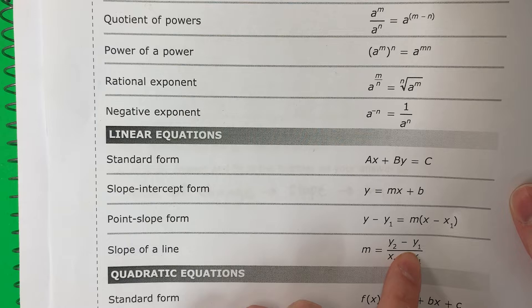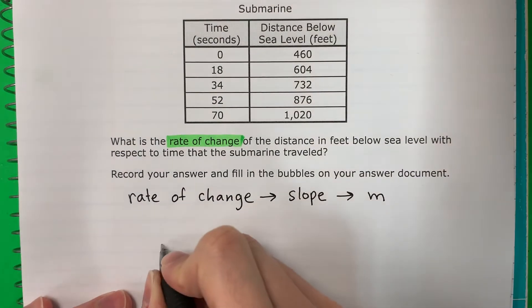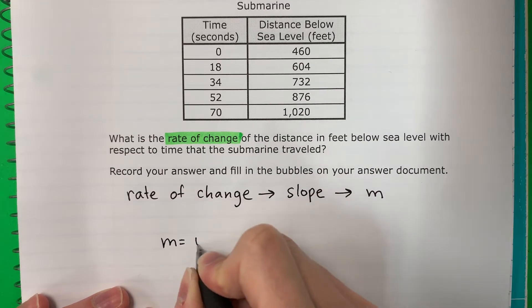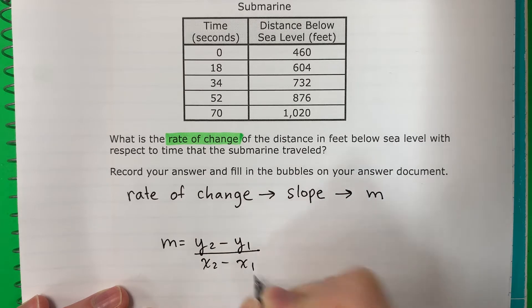M equals Y2 minus Y1 divided by X2 minus X1. Let's go ahead and copy that down. M equals Y2 minus Y1 divided by X2 minus X1.